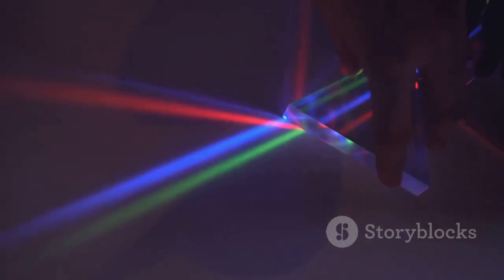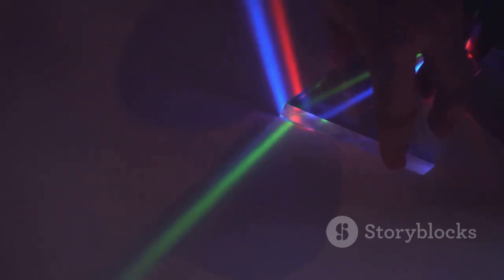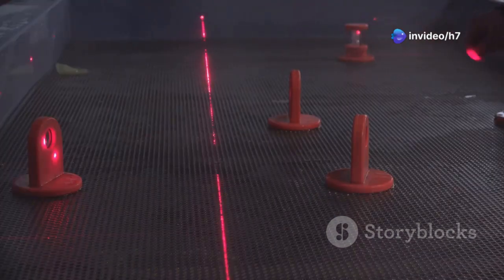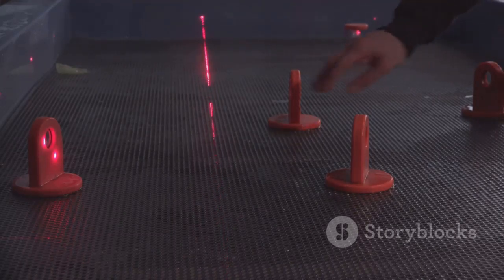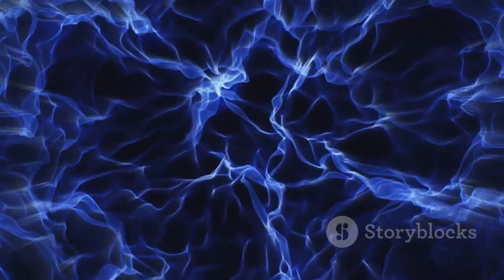The journey to reconcile the seemingly contradictory wave-like and particle-like aspects of light began in earnest with Thomas Young's double-slit experiment in the early 19th century. Young's ingenious experiment demonstrated the phenomenon of interference, a hallmark of wave behavior. When light is shone through two closely spaced slits, it creates an interference pattern on a screen behind the slits, characterized by alternating bright and dark bands. This pattern arises from the constructive and destructive interference of the light waves emanating from the two slits, providing compelling evidence for the wave nature of light.